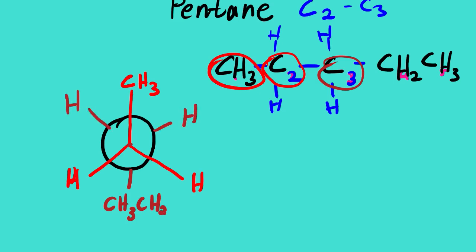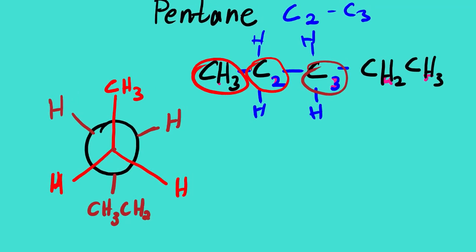We are going to draw the most stable Newman projection, which is the staggered anti conformation. This is one of the ways we can draw the Newman projection of pentane.